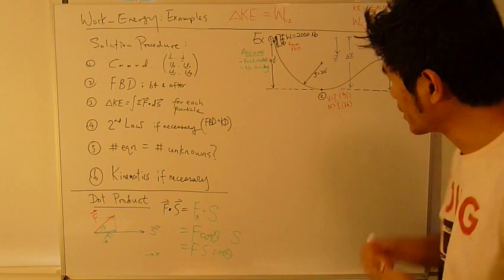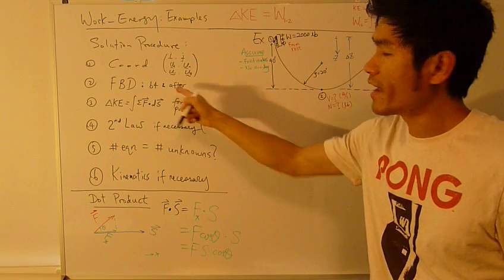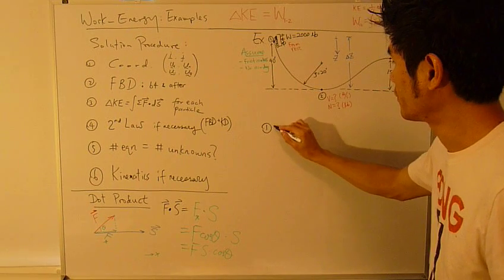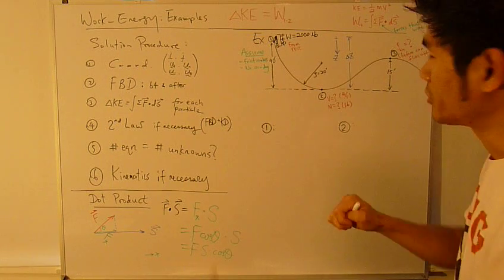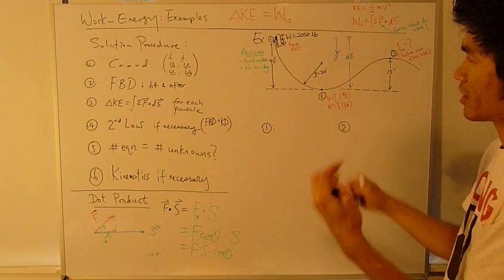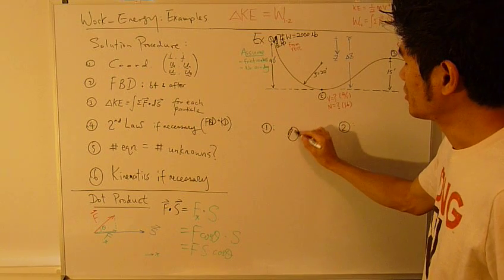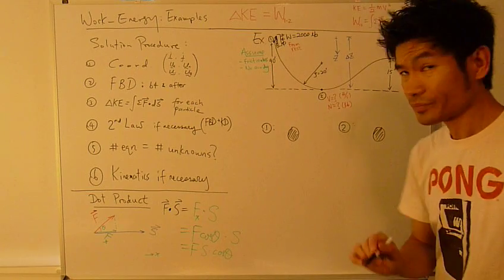Step 2, draw free body diagrams. Free body diagrams draw for before and after. Before is position 1, after is position 2. Free body diagram, you draw just the object. In this case, it's my car and people. I'm just going to simplify it and draw a little circle.